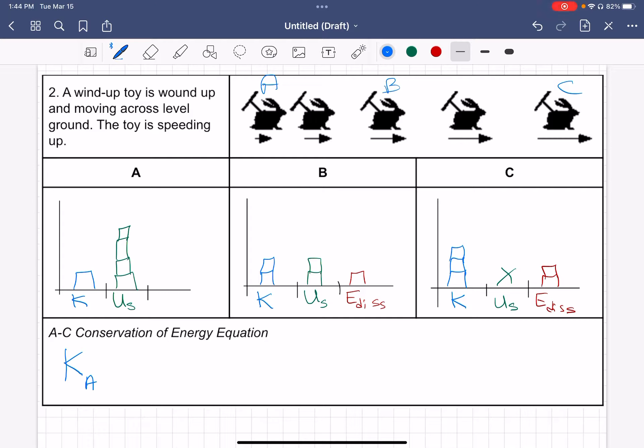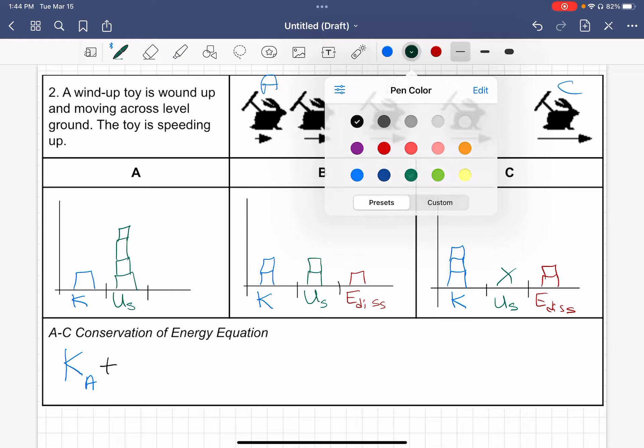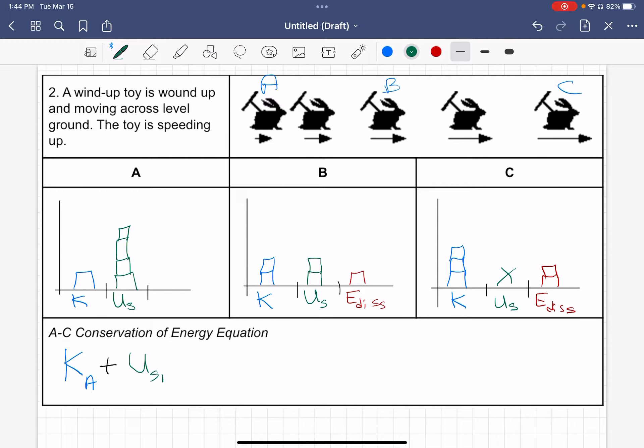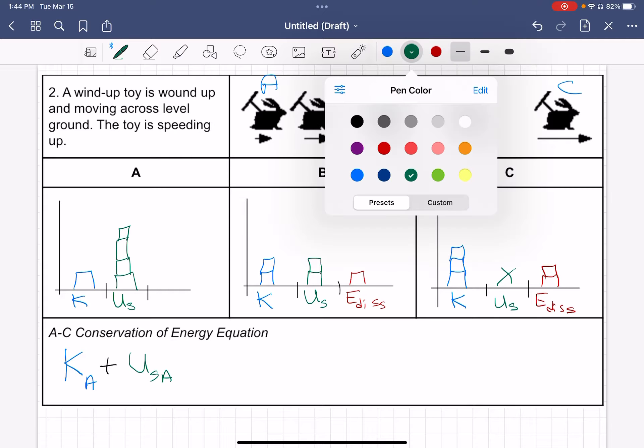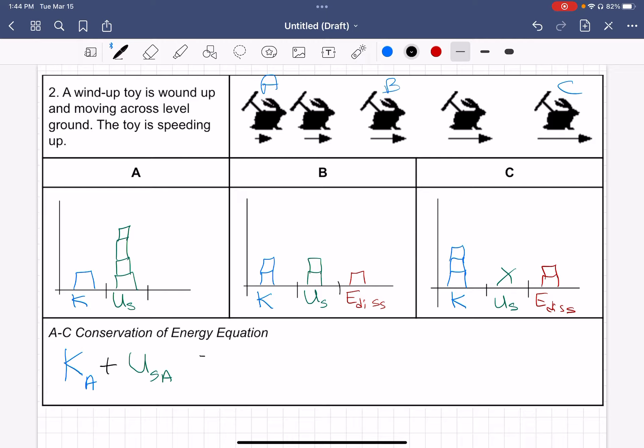So at A, I've got some kinetic energy plus some elastic potential. And so I'm putting little A's after those types of energy, just to indicate I'm talking about the kinetic energy at A and the elastic potential energy at A. So now I've listed in this equation all of the energy that's present in my bar chart at A.